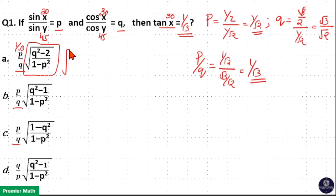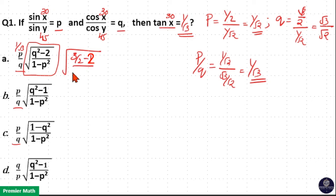So let us check this term. Here root of q squared is 3 by 2. So 3 by 2 minus q by 1 minus p squared is equal to 1 by 2. Now 1 minus 1 by 2 is 1 by 2, and 3 by 2 minus q must be minus, so this is not your answer.